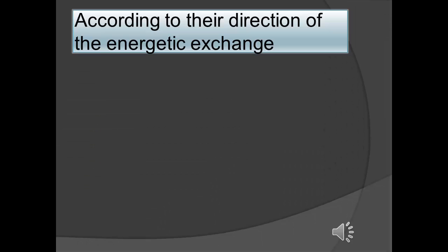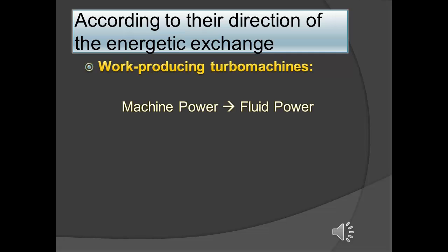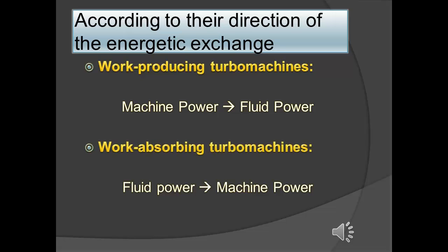In this transparency, we are going to talk about the direction of the energetic exchange. Turbomachines are responsible for the exchange between the machine and the fluid. In the work-producing turbomachines, the machine's power is turned into fluid's power. In contrast to work-absorbing turbomachines, where the fluid's power is turned into machine's power.